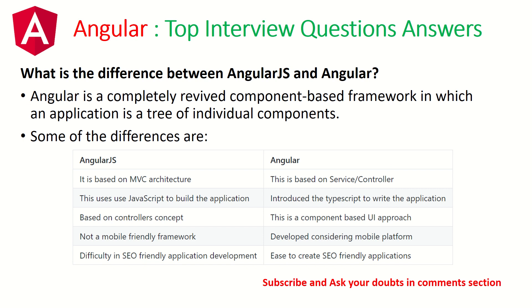What is the difference between AngularJS and Angular? This is an interesting question asked to see whether you have really worked on Angular or not. Angular is a completely revived component-based approach in which an application has a tree of individual components. AngularJS is based on MVC architecture whereas Angular is completely component-driven. AngularJS uses JavaScript to build the application; Angular uses TypeScript.